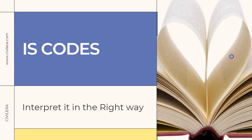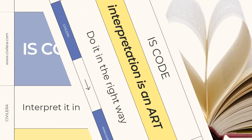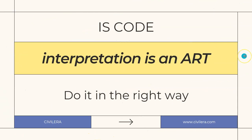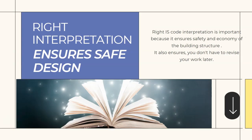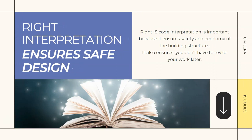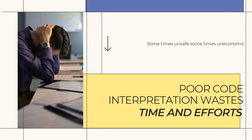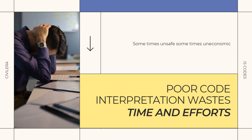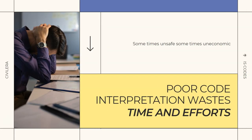This is Premjit here from civilera.com. I will give you a few tips that will help you interpret codes in the right way. Interpretation of a code is an art — you will always have to do it in the right way. Right interpretation ensures safe design and also ensures you don't have to revise your work later. Poor code interpretation wastes your time and efforts; it's sometimes unsafe and at times uneconomic.